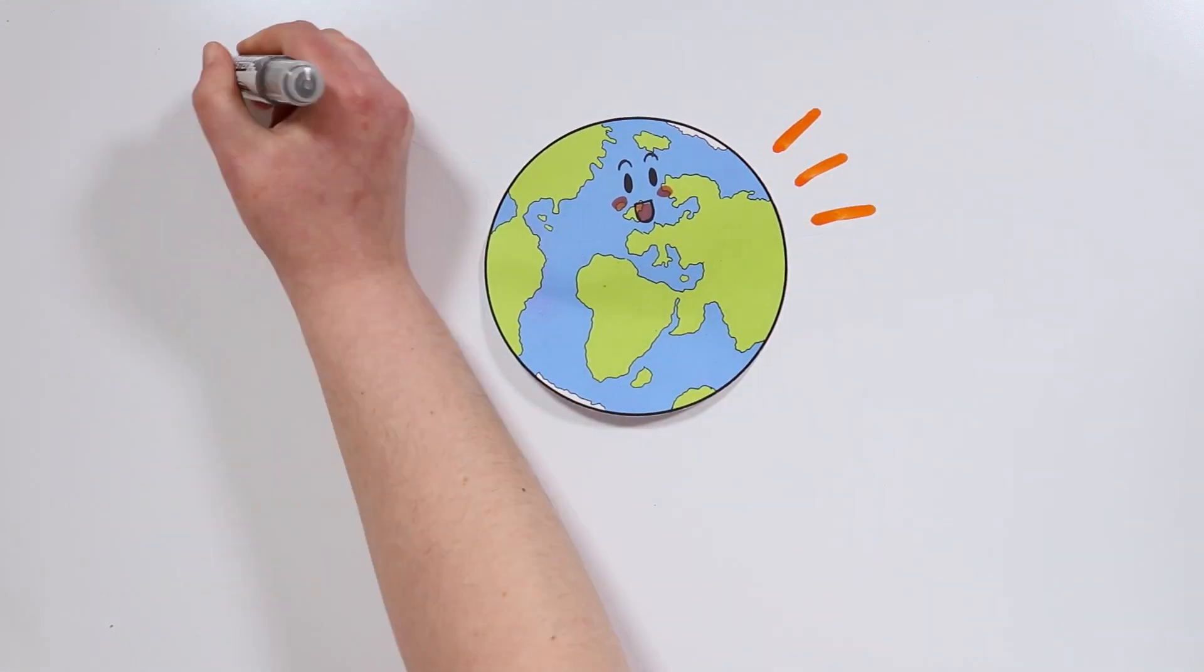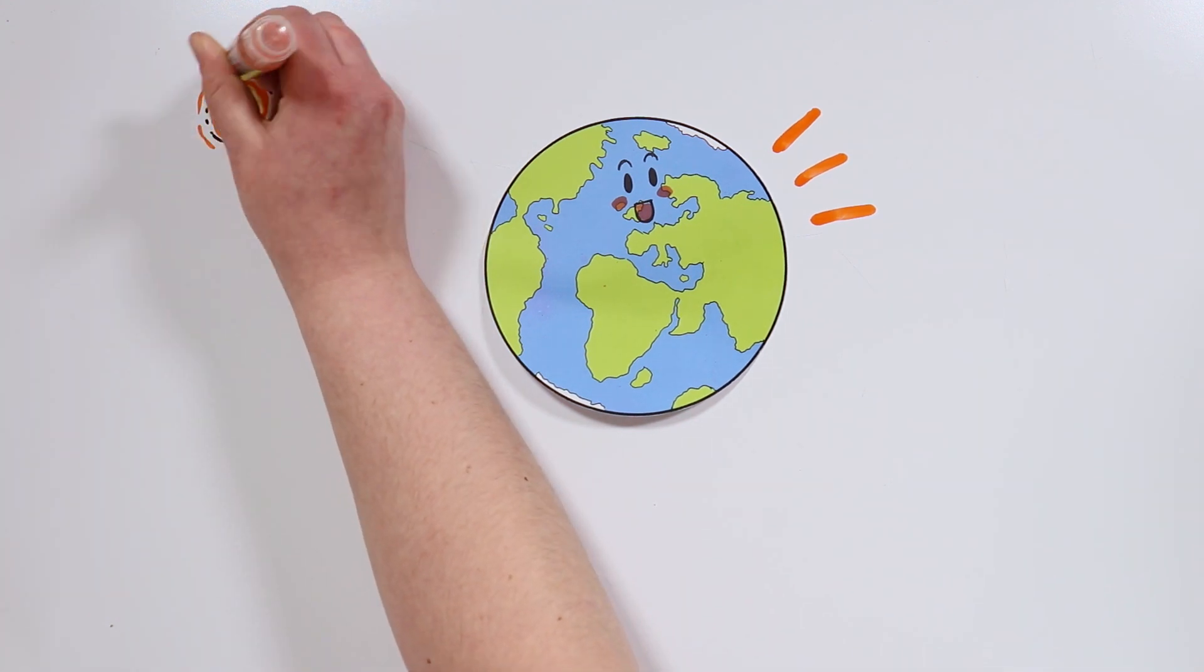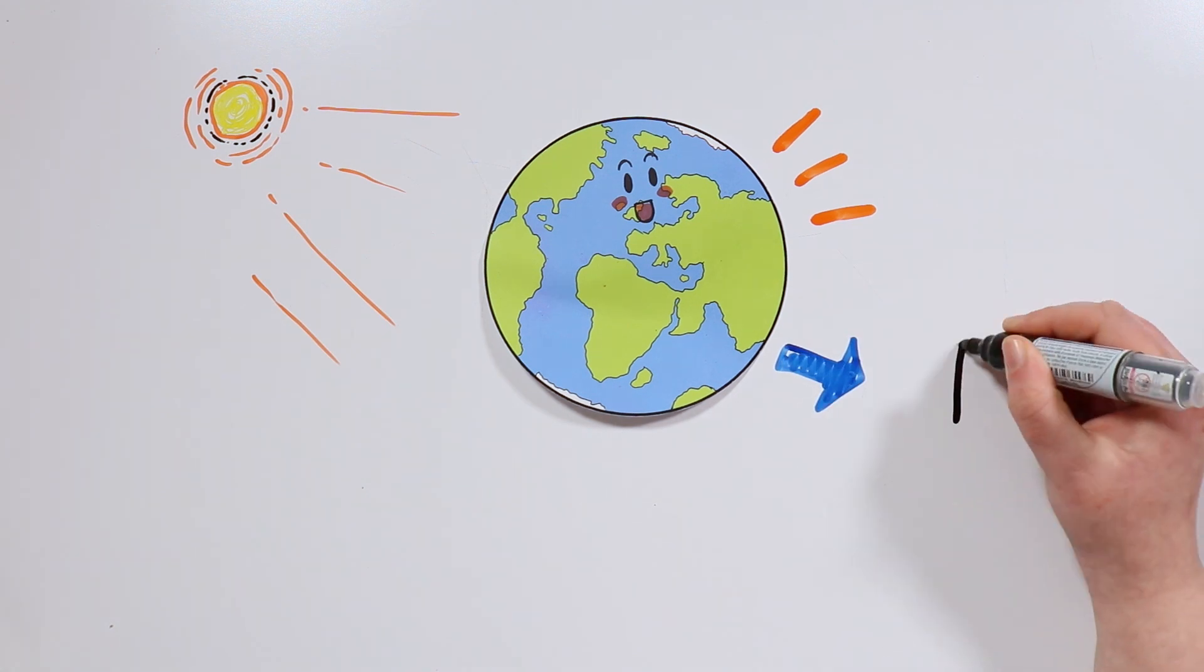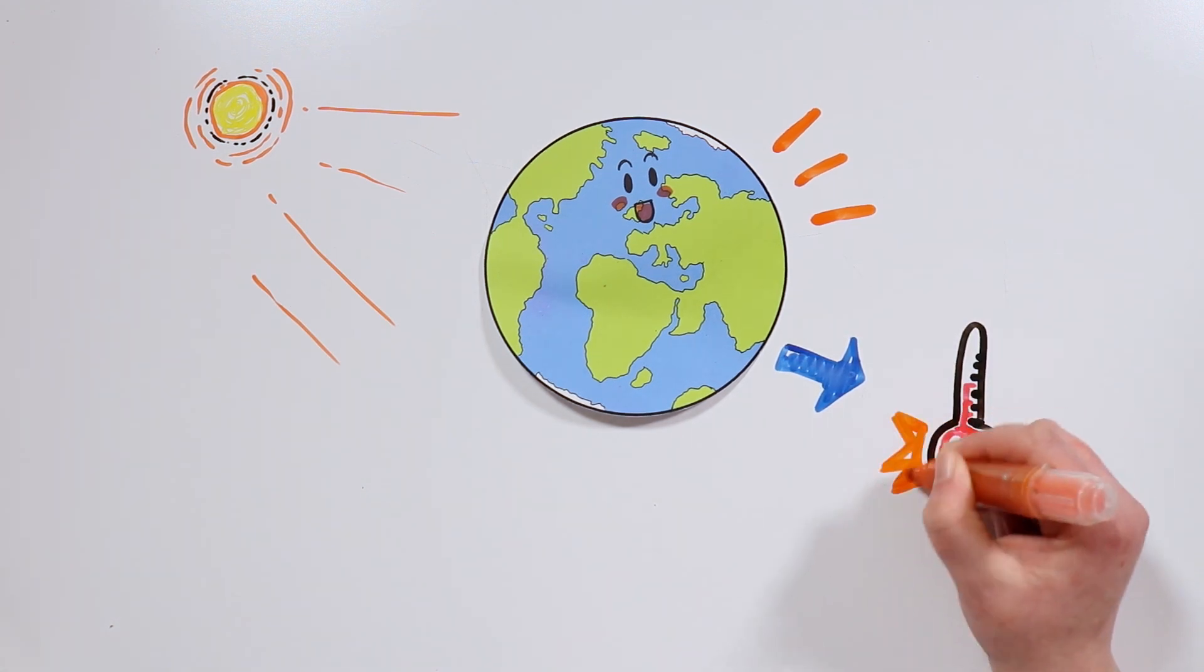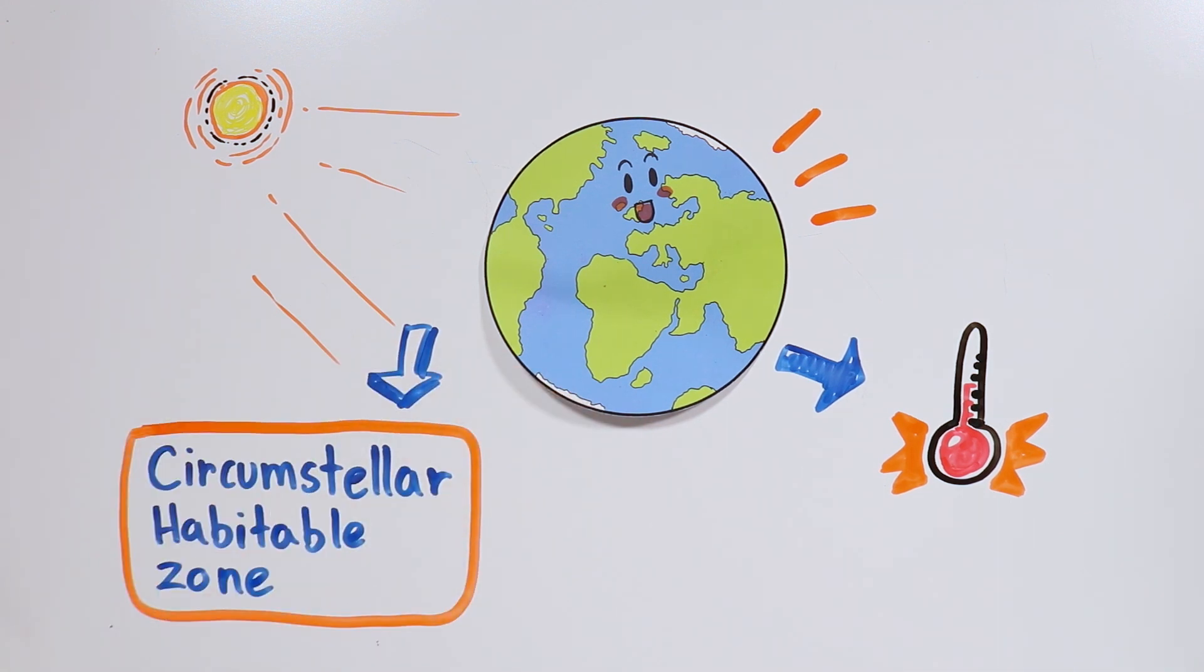To start off, it is no coincidence that there is life on this planet, since we are at the right distance from the sun for our planet to have a temperature suitable for the development of life. This is known as the Goldilocks zone, or habitable zone.